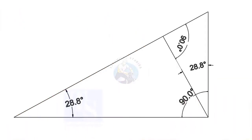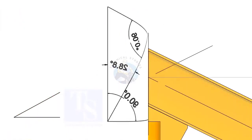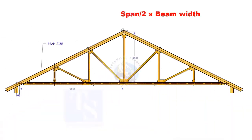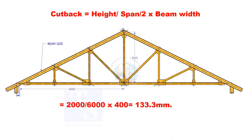Basically the formula is based on the theory, opposite angles are equal. Here, the cutback is truss height divided by half span multiplied by the actual width of the girder.